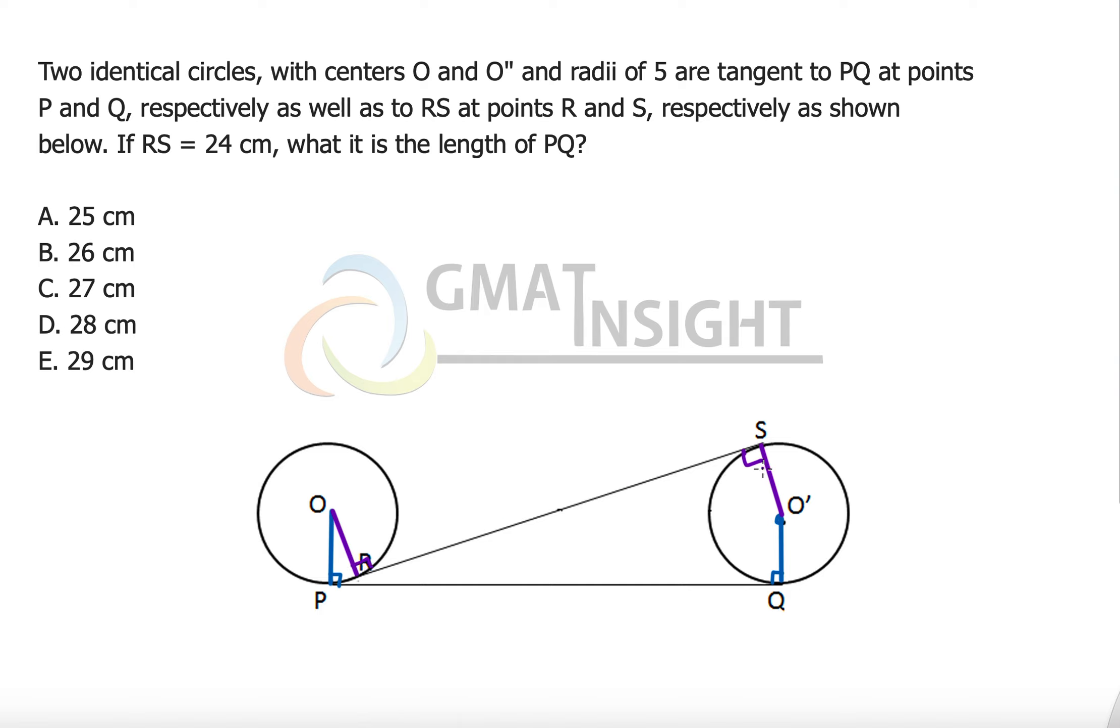And here again we have 90 degrees coming up right here. This is point R, this is point S. Now the question says if RS is equal to 24. That means we have a common tangent but that's not the direct tangent, that is the cross tangent and this length is equal to 24. So what is the length of PQ?